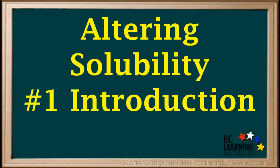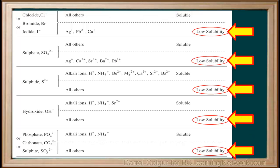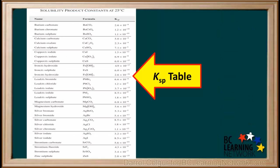Here we'll show you how the solubility of a compound can be changed. We're dealing mainly with low solubility or slightly soluble compounds. These include compounds identified as low solubility on the solubility table and all the compounds listed on the Ksp table in your data booklet.